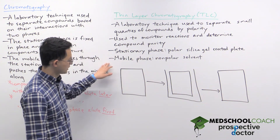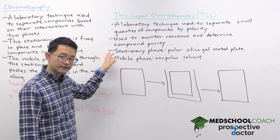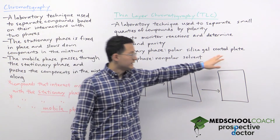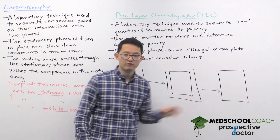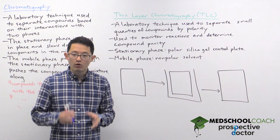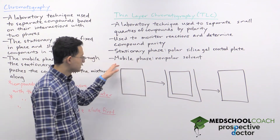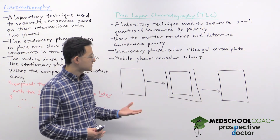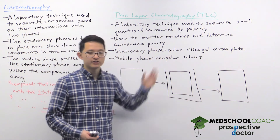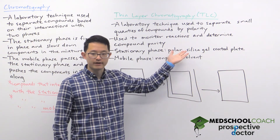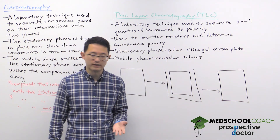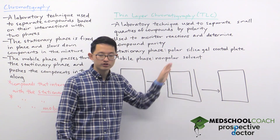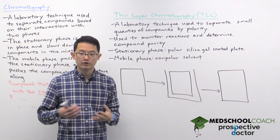So how does TLC work? Again there's a stationary phase and a mobile phase. The stationary phase is a plate coated with silica gel, which is very polar. The mobile phase is going to be a non-polar solvent. Compounds that interact more with the stationary phase are polar compounds, so polar compounds will travel slowly, while non-polar compounds interact more strongly with the mobile phase and move more quickly.